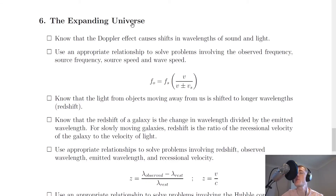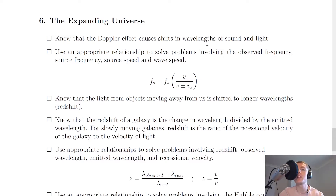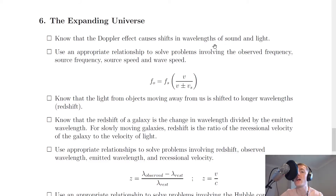The last subtopic is number six — the expanding universe. It says you need to know that the Doppler effect causes shifts in wavelengths of sound and light. The Doppler effect is the change in frequency or wavelength for an observer moving relative to a source, whether that's a source of sound or a source of light.